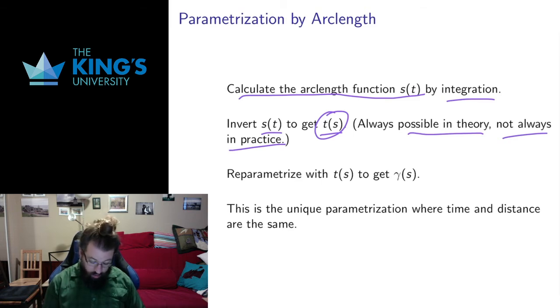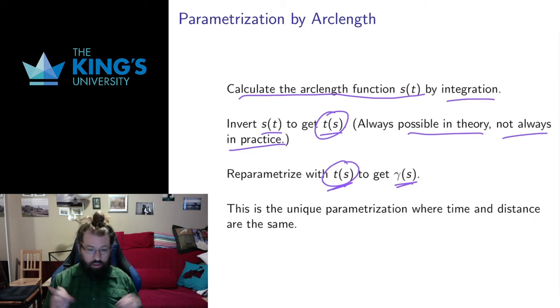All right so then I will use this inverted function to reparametrize the curve, the thing I talked about at the start of the previous video and get gamma of s. And this is then going to be a parameterization where the parameter is the arc length. So this is going to be the unique parameterization where time and distance are in fact the same. It's going to start at zero and then gamma of s equals one will be one unit along the curve. Gamma of s equals two will be two units along the curve.